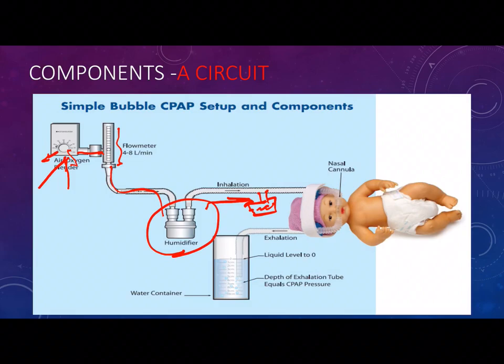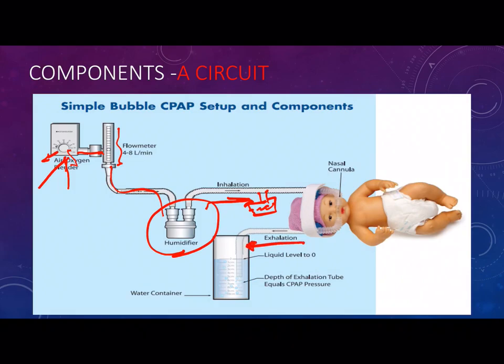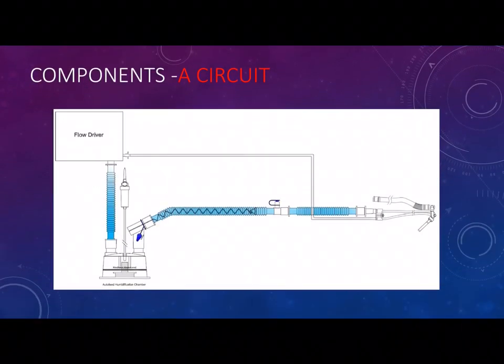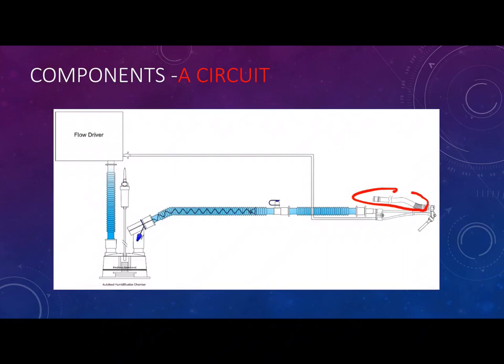After reaching the baby, there is an expiratory limb. In the continuous flow type, the expiratory limb is usually long and ends by submersion under the water seal or is connected to the ventilator. In the variable flow type, the expiratory limb is either very small or even absent in some subtypes.